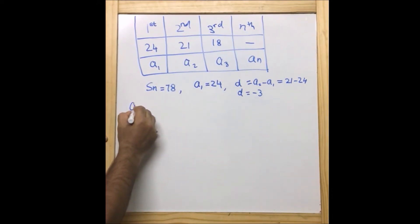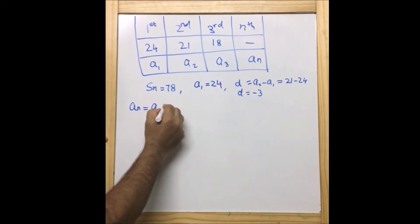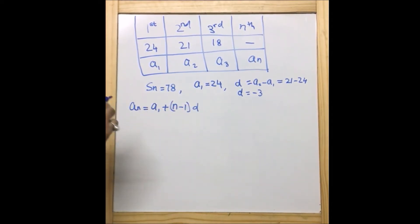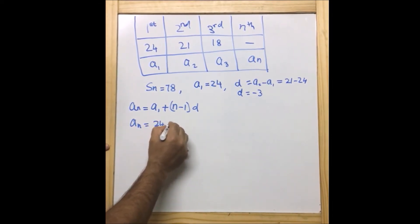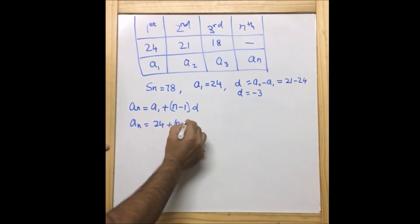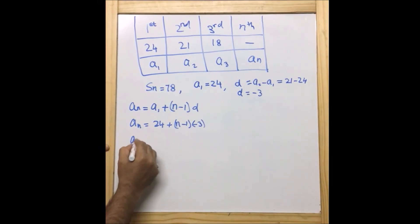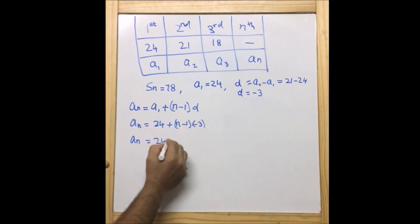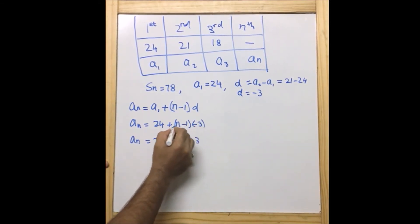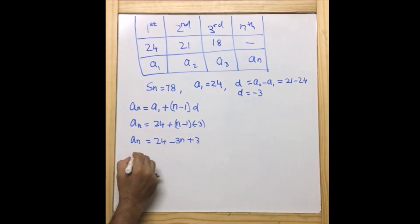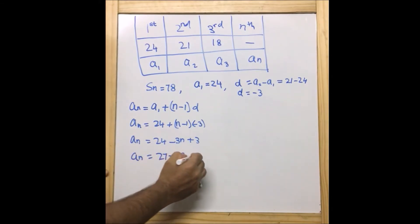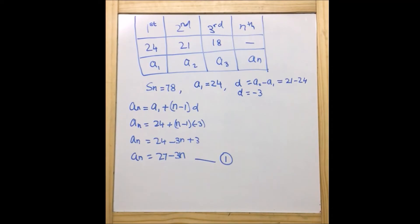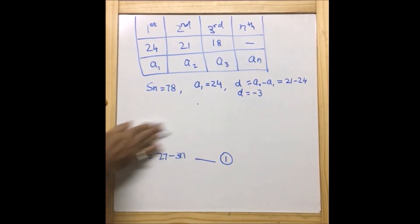Now I'll use the formula: an = a1 + (n - 1) × d. We are going to derive an equation from this. So an = 24 + (n - 1) × (-3), which gives an = 24 - 3n + 3, and after solving: an = 27 - 3n. Let us name this Equation 1.